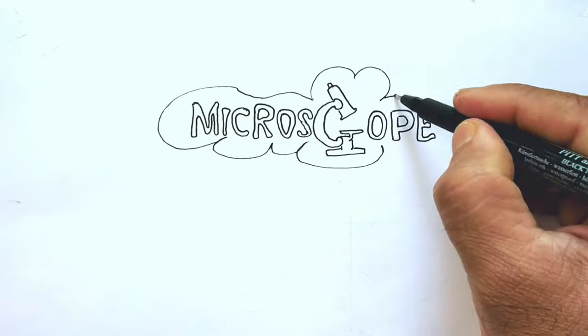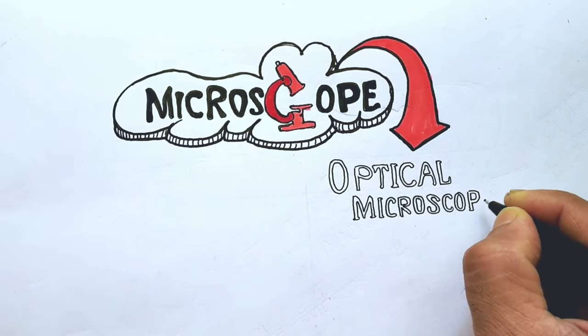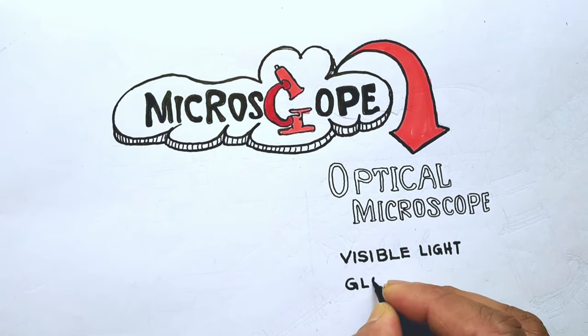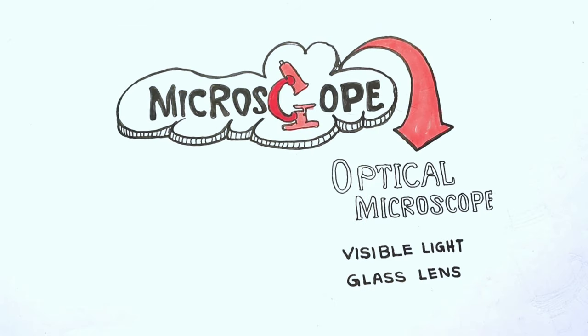Optical microscope is a kind of microscope that commonly uses visible light and a system of lenses to generate magnified image of small objects.